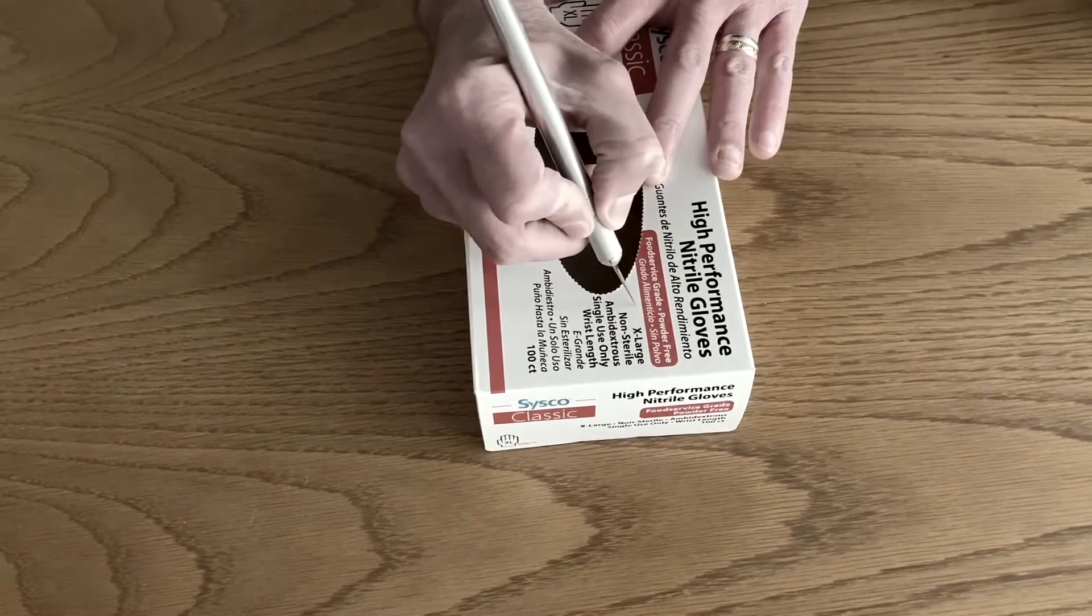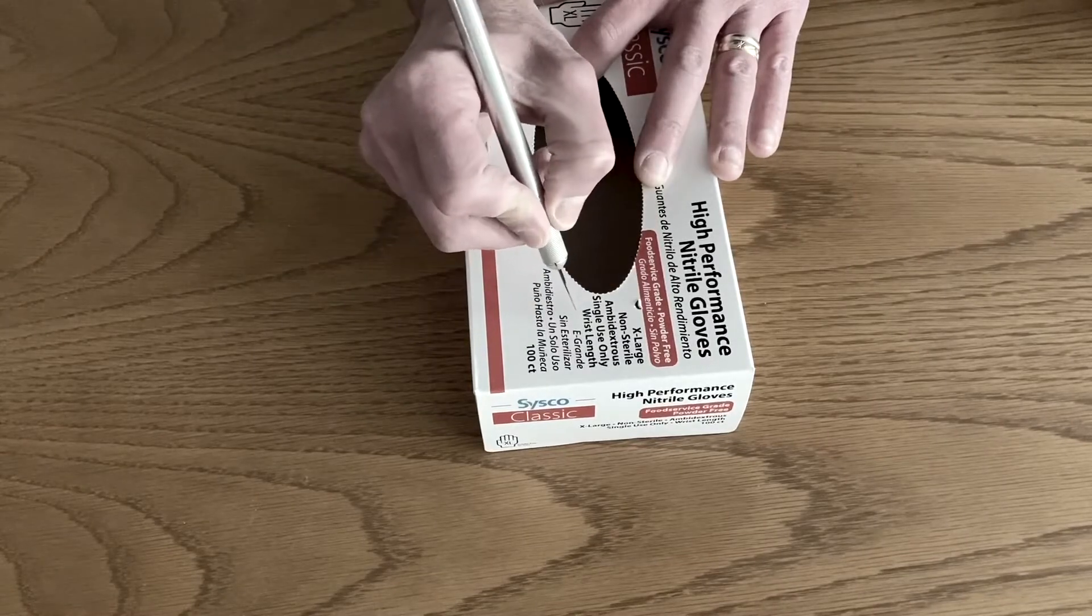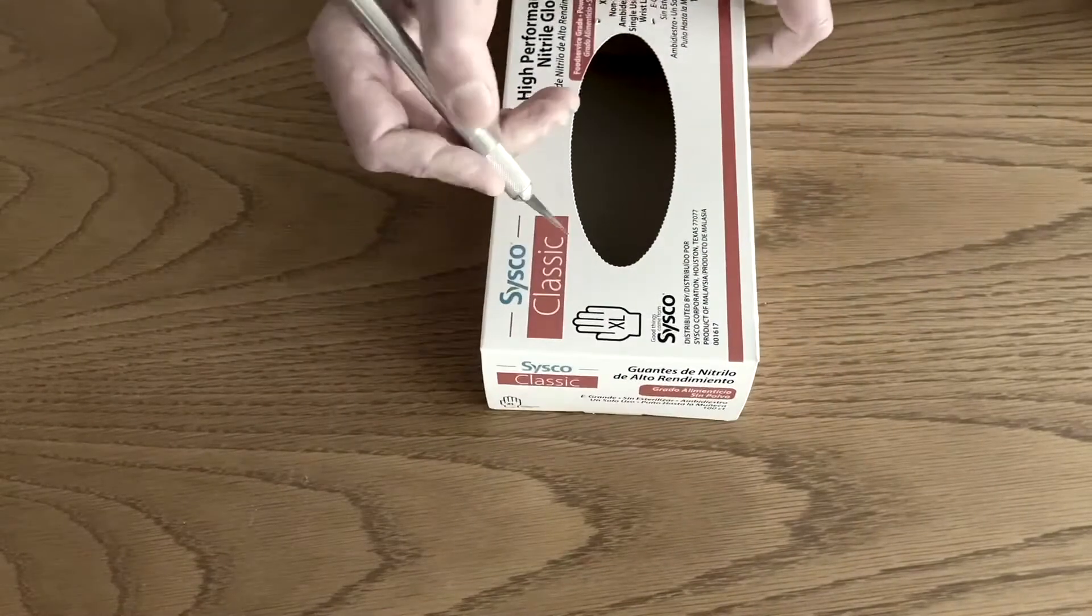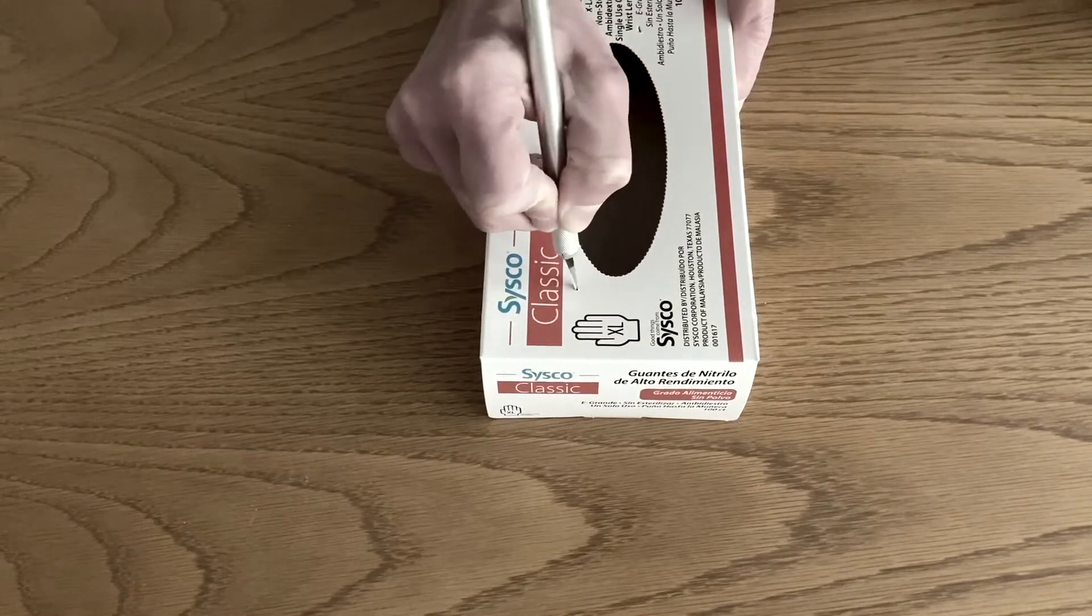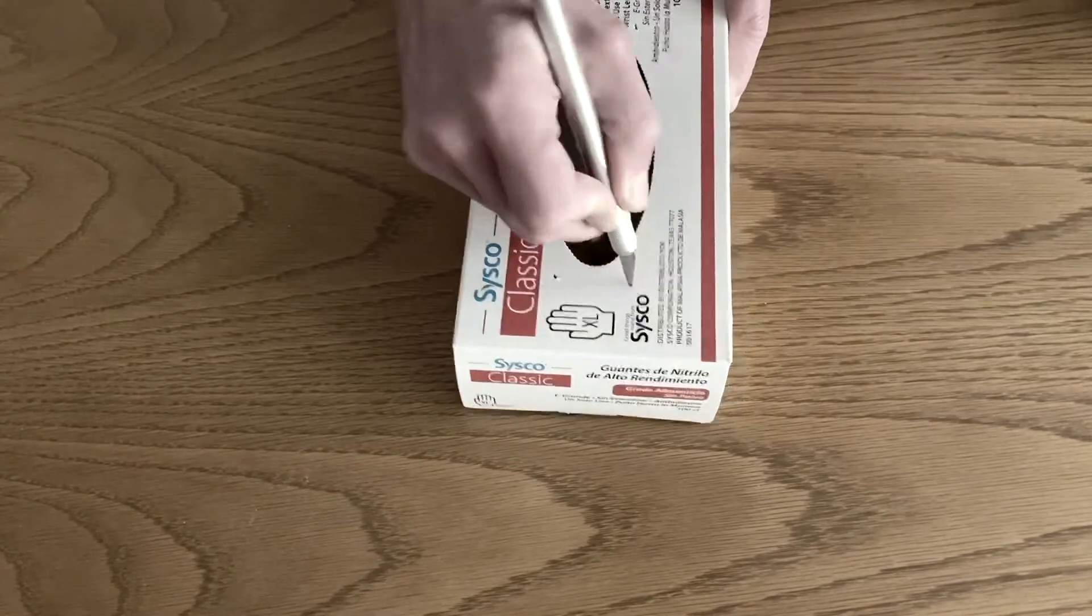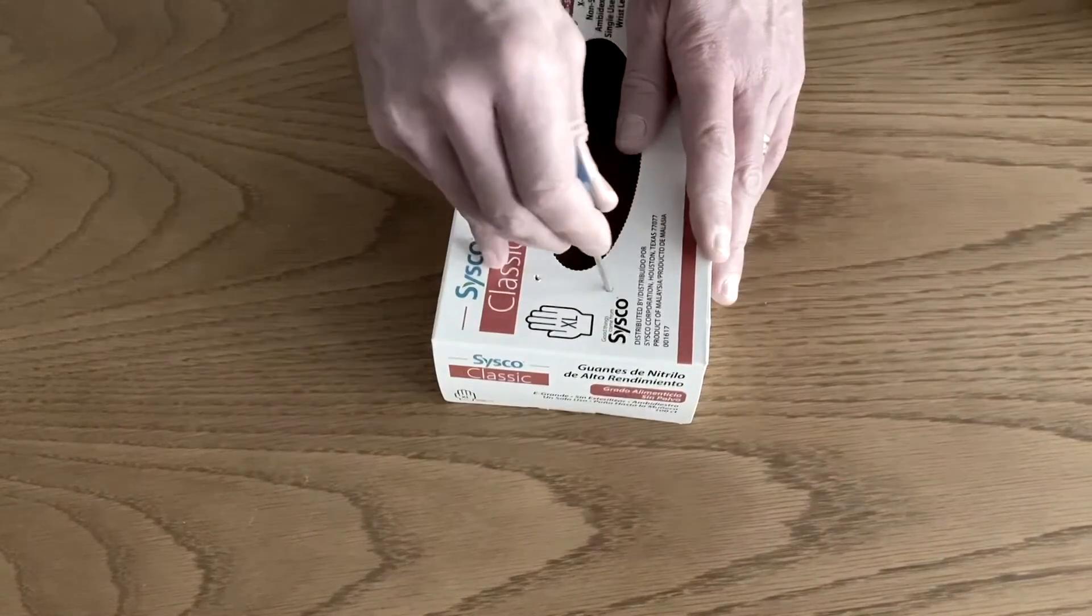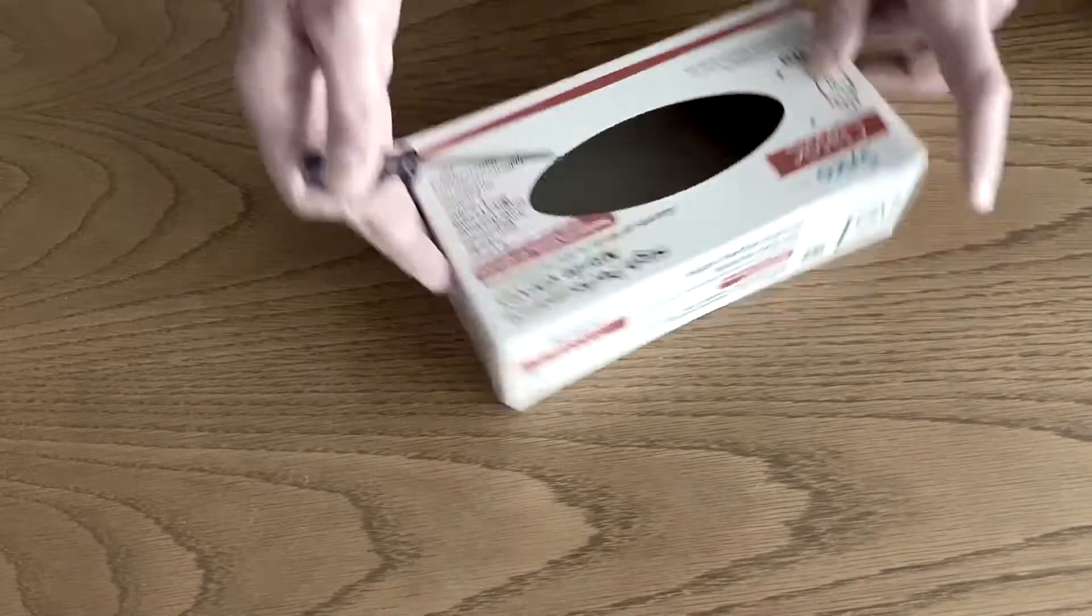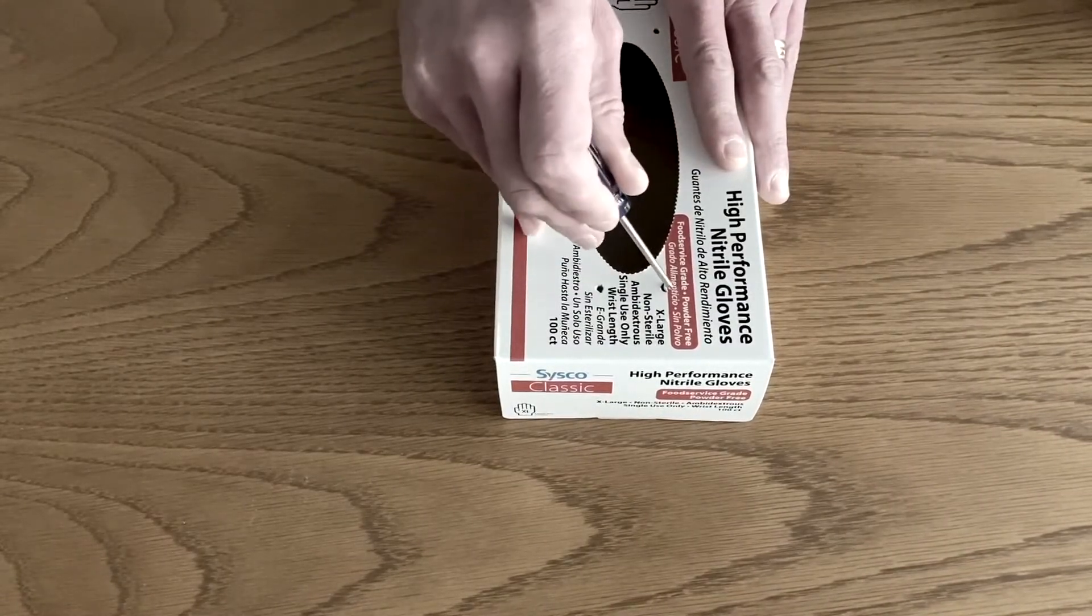Using your exacto knife, poke two holes on each end of the larger hole. And again on this side. One, and two. Use the small Phillips head screwdriver to further the holes. One, two, three, and four.